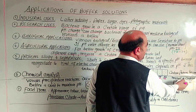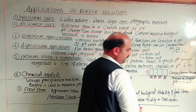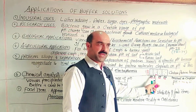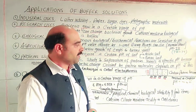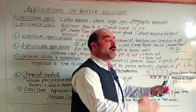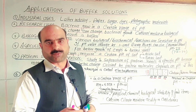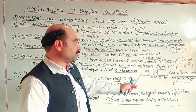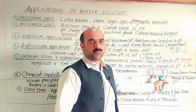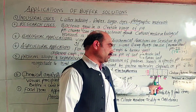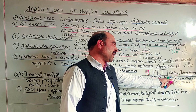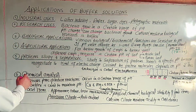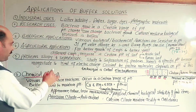Certain proteins become neutral in certain pH zones and stop. When a protein does not find its suitable pH range in a zone, it stops in the zone with its specific pH, while the rest continue forward. This allows us to identify what type of protein it is and whether it is the required protein. At different zones with different pH values, each protein stops where it becomes neutral, and in that way it can be studied and identified.